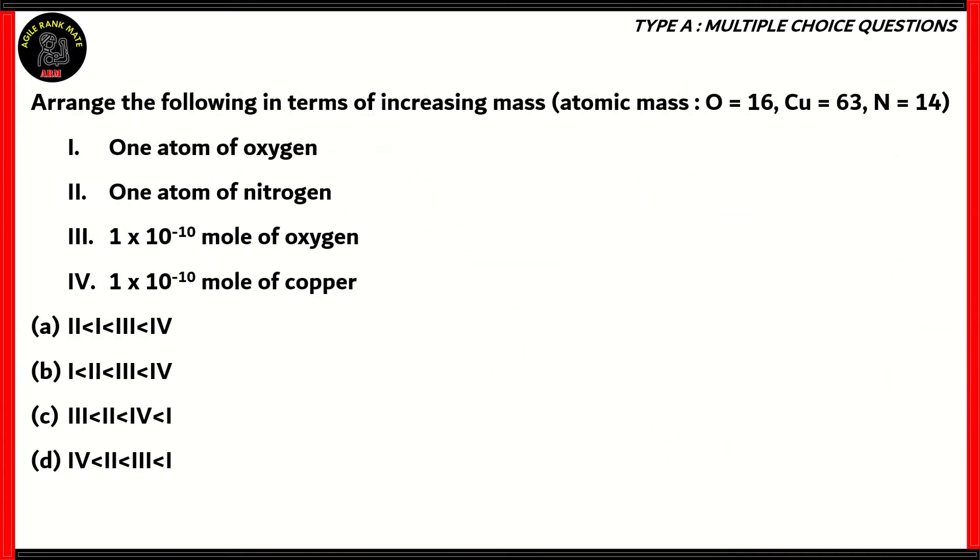Let's look at another question. Arrange the following in terms of increasing mass. Oxygen's mass is 16, copper's mass is 63, nitrogen's mass is 14. Is it 1 atom of oxygen, 1 atom of nitrogen, 10 raised to minus 10 moles of oxygen, 10 raised to minus 10 moles of copper?